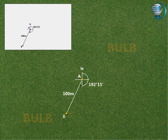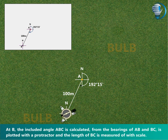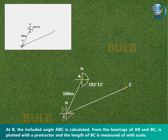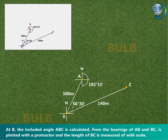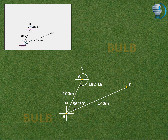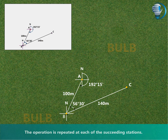At B, the included angle ABC, as calculated from the bearings of AB and BC, is plotted with the protractor and the length of BC is measured off with scale. The operation is repeated at each of the succeeding stations.